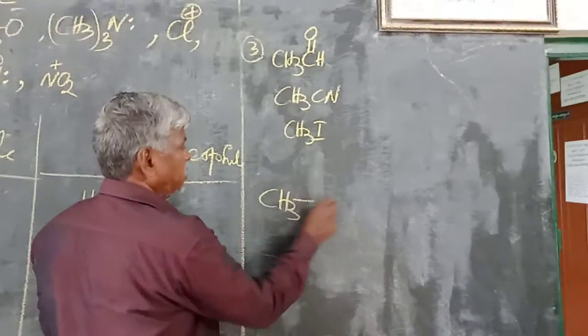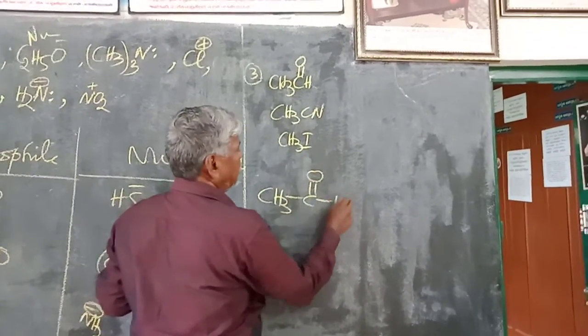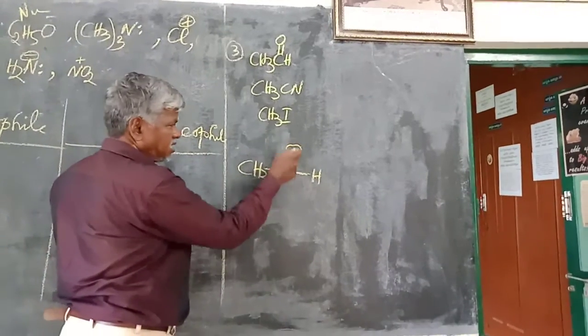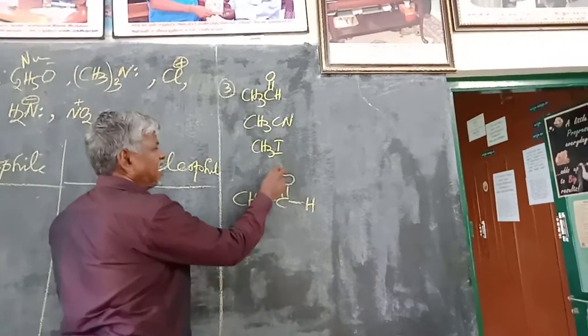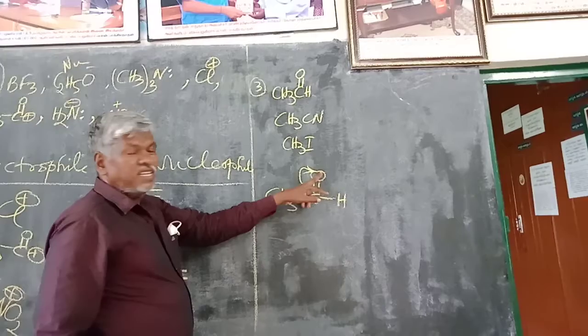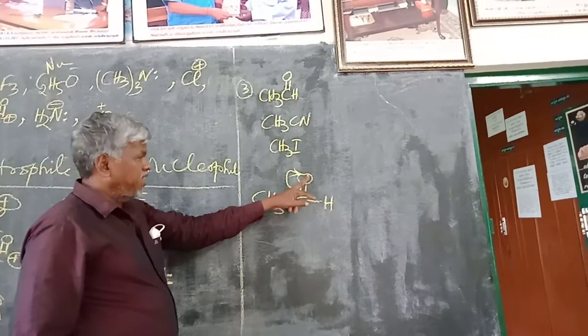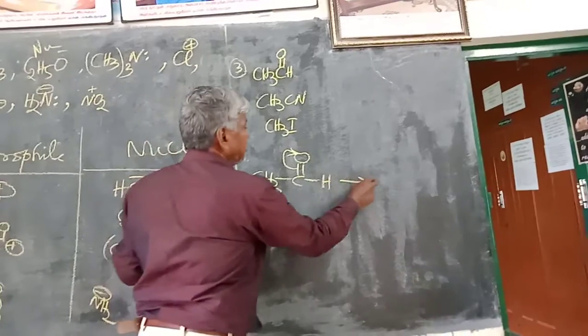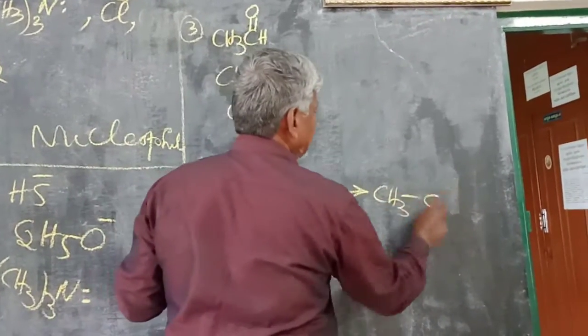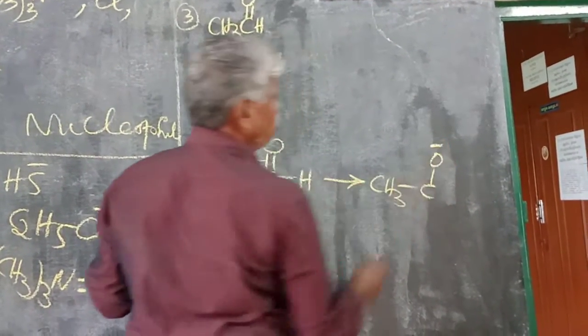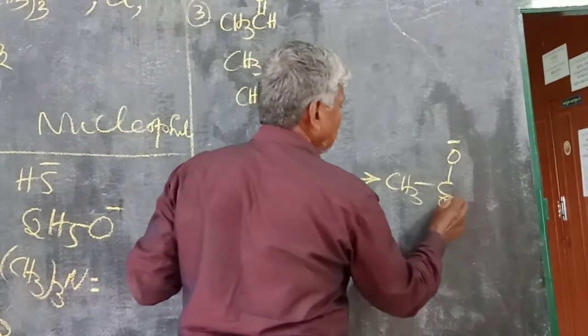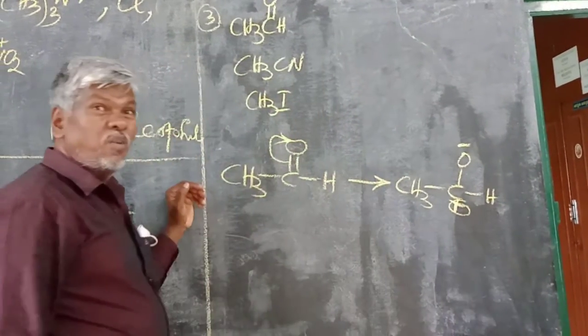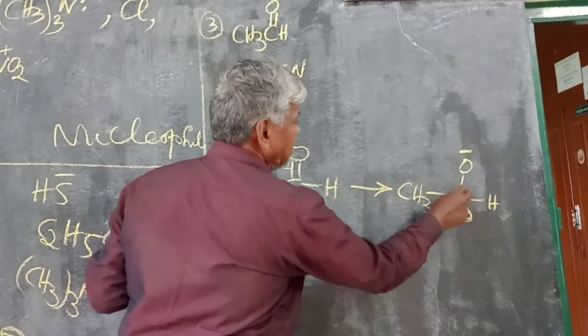Let us take the first example. This carbonyl group - the oxygen atom being electronegative, it attracts the bonded electrons towards itself. Here you get negative charge on the oxygen and positive charge on the carbon. So the electrophilic center is this center.